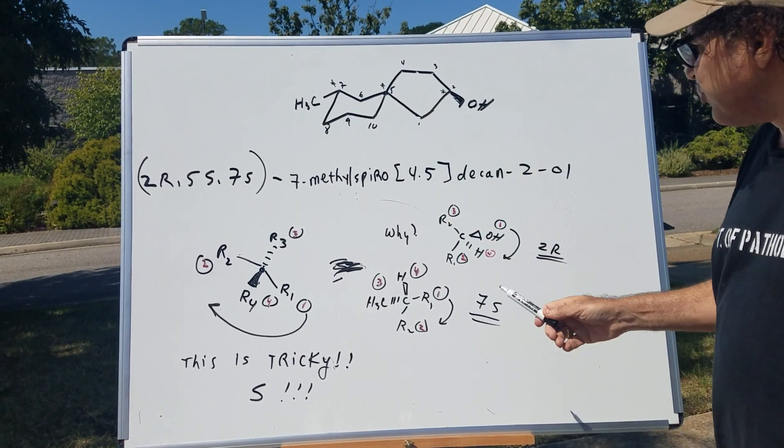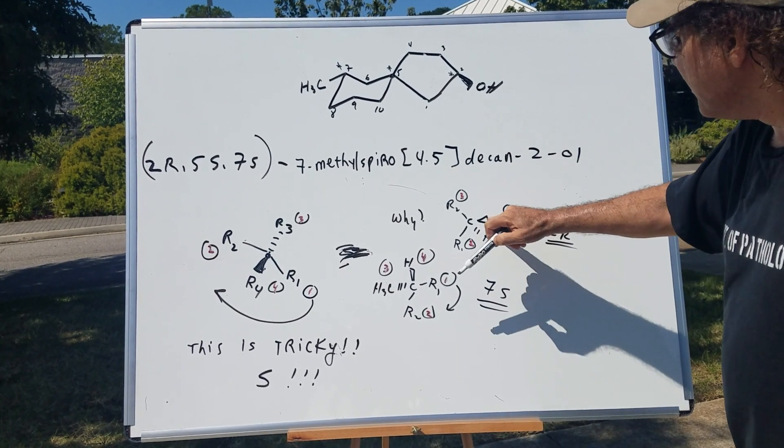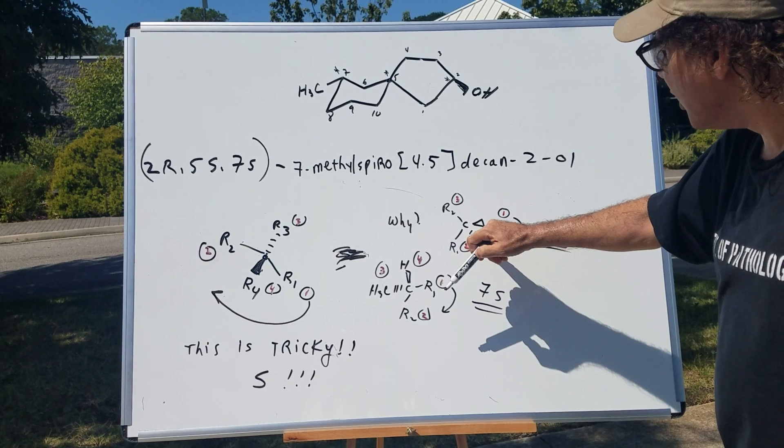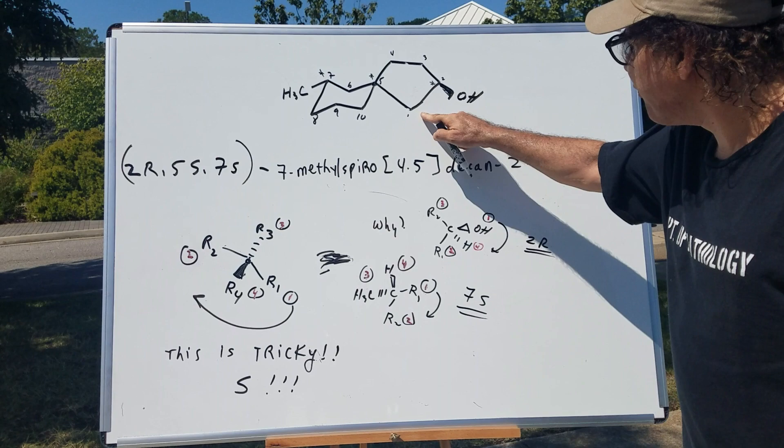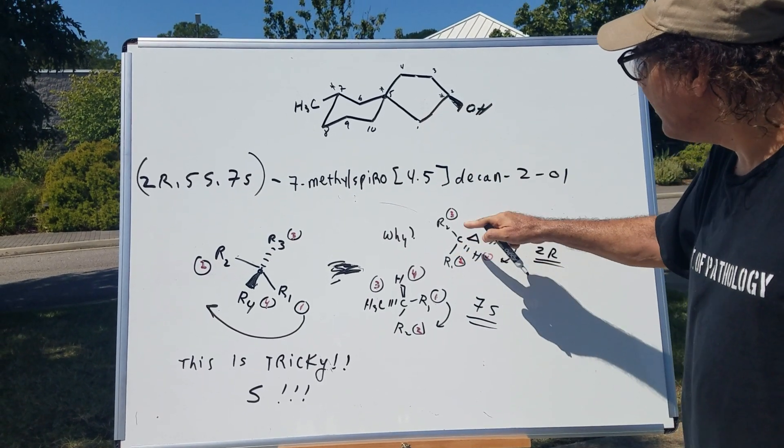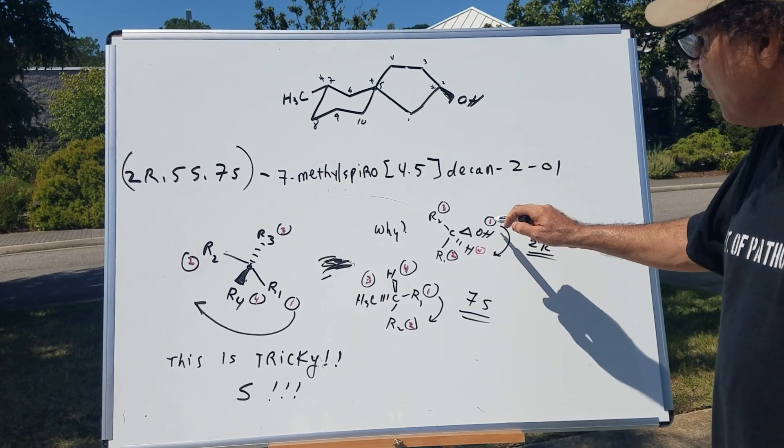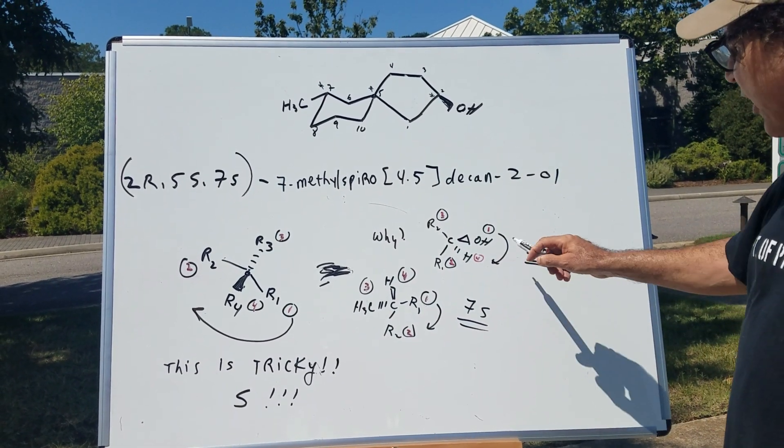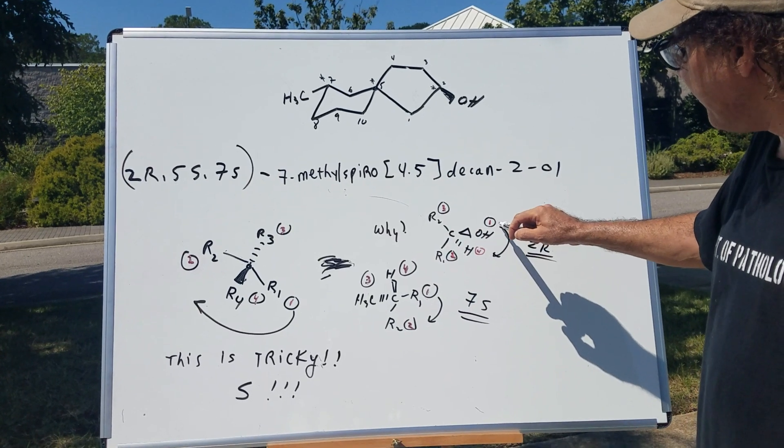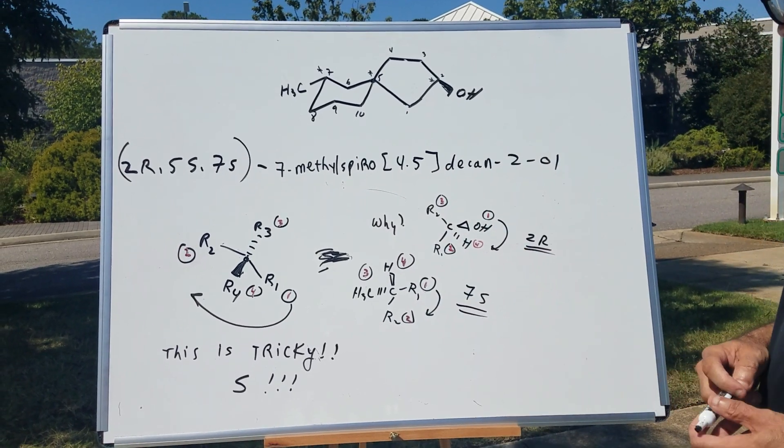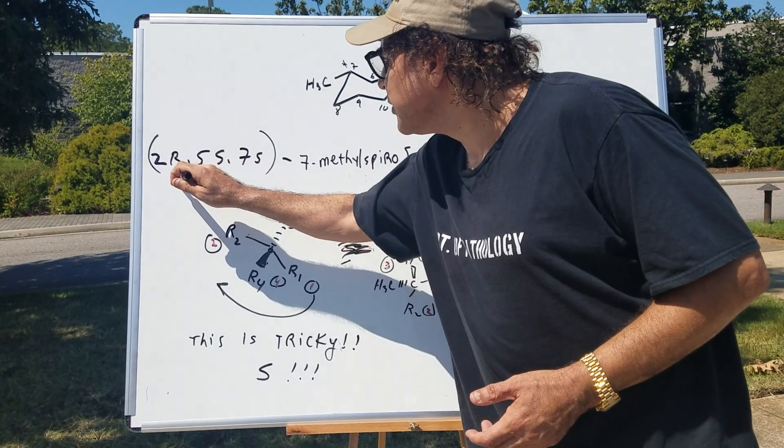If you go to number 2, that's easy enough. The OH has got the first priority. Notice this is a wedge, so obviously, number 4 was a hydrogen as a dash. This path I'll call R1, and this path up here would be R2. Well, the OH has got the highest priority. Then this path will be 2nd, this is 3rd, and this is 4th. And therefore, going clockwise gives you a 2R. So that's easy enough.